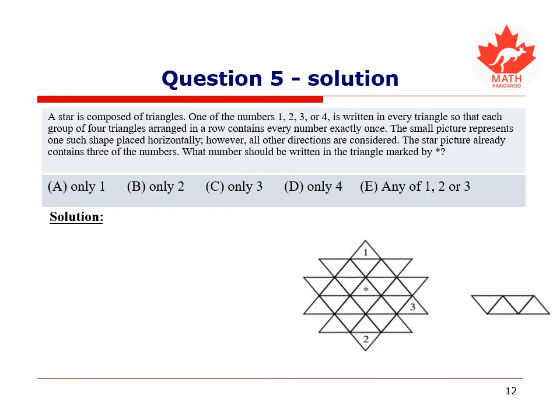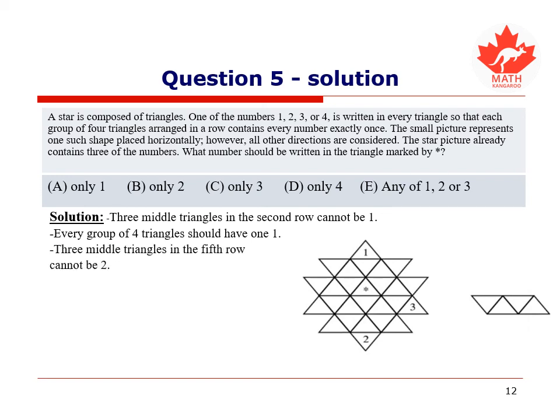For this solution, first note that the three triangles in the middle of the second row of triangles cannot contain 1 since the triangle above them already contains 1. On the other hand, every group of four triangles should have at least 1. Therefore, the corner triangles on the second row both contain 1s. Similarly, because the number 2 is in the sixth row, there must be 2s in the corners of the fifth row.